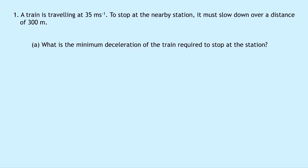Question 1 says that a train is travelling at 35 metres per second. To stop at the nearby station, it must slow down over a distance of 300 metres. Part A asks what is the minimum deceleration of the train required to stop at the station? Just like any equation of motion question, we're going to write down SUVAT on the left hand side so we can work out what we know, what we don't know, and therefore which equation of motion we're going to use.